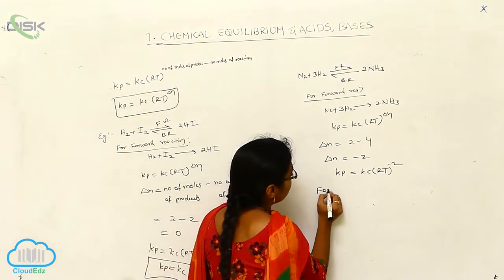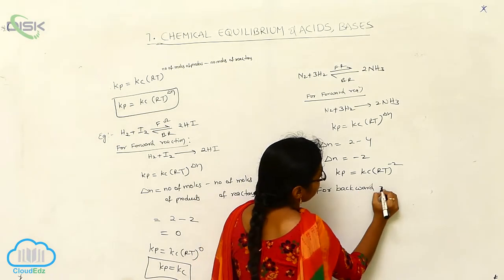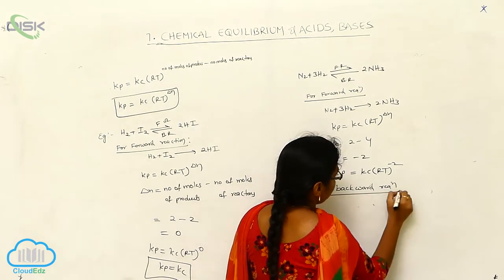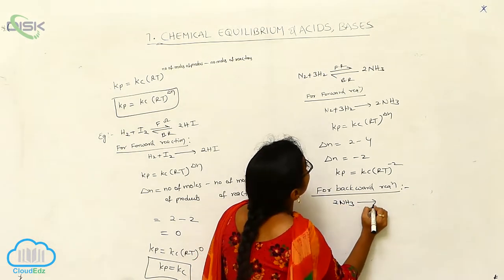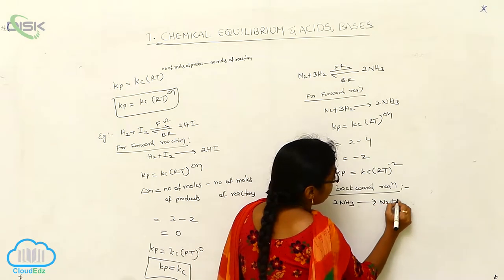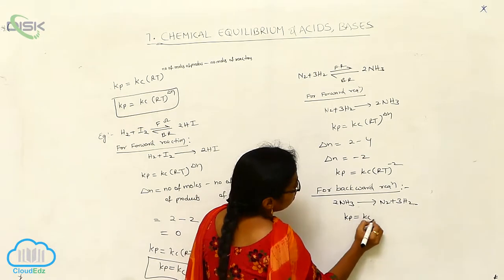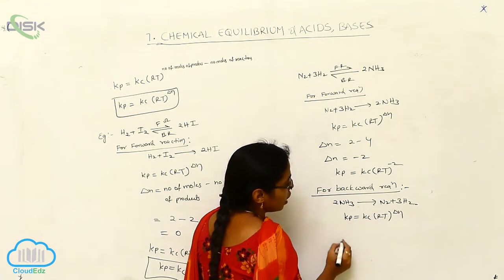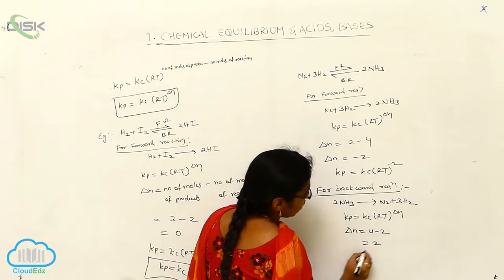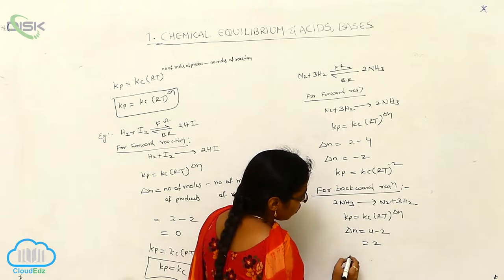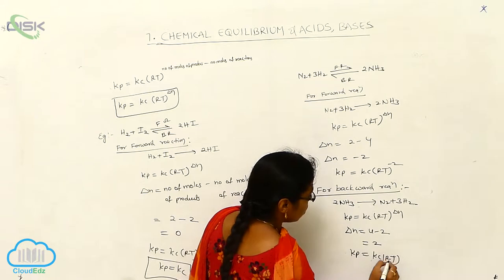For the backward reaction, 2NH3 gives N2 plus 3H2. Now we can write Kp is equal to Kc RT to the power of delta N. Delta N is nothing but 4 minus 2, so delta N is equal to 2. Therefore, Kp is equal to Kc RT to the power of 2.